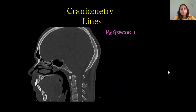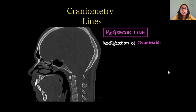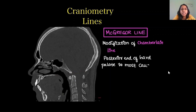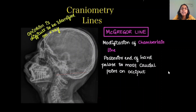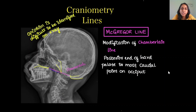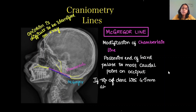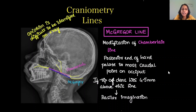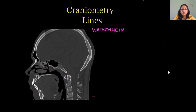Next is McGregor's line, a modification of Chamberlain's line. It starts from the posterior end of the hard palate but joins to the most caudal point on the occiput rather than the opisthion, since the opisthion can be difficult to identify on X-ray. If the tip of the dens lies 4.5 mm above this line, it is called basilar invagination — compared to 3 mm for Chamberlain's line.